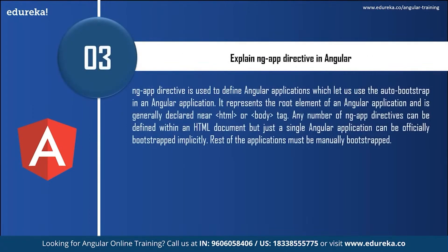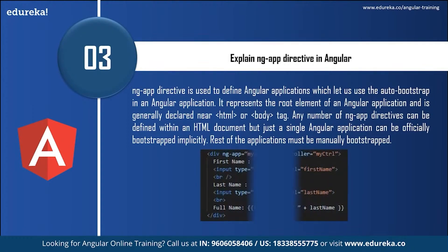Next: explain ngAppDirective in Angular. ngAppDirective is used to define an Angular application, which lets us use auto-bootstrap in an Angular application. It represents the root element of an Angular application and is generally declared near the HTML tag or body tag. Any number of ngAppDirectives can be defined within an HTML document, but just a single Angular application can be officially bootstrapped implicitly — the rest must be manually bootstrapped.